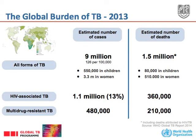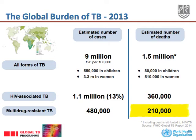And finally, multi-drug resistant tuberculosis was present in 2013 in at least 480,000 people, with an estimated number of deaths of 210,000.